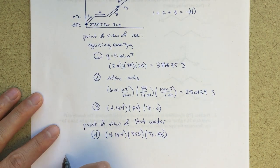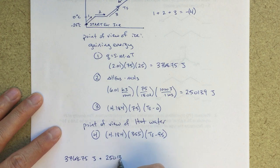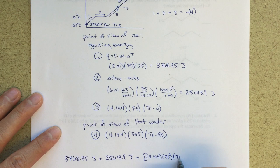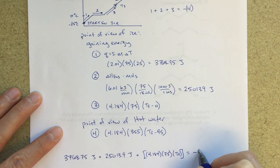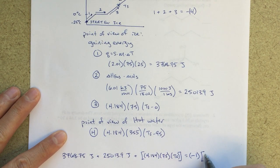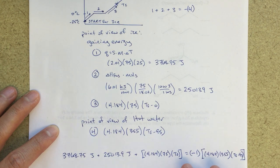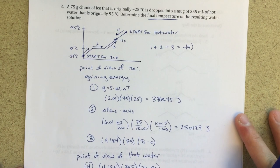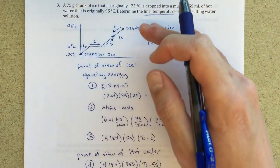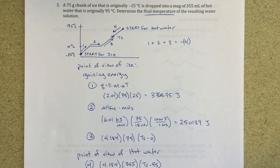Writing it all out: 3768.75 J + 25,013.9 J + (4.184 × 75 × T_final) = −(4.184 × 355 × (T_final − 95)). I've now got one big equation with one unknown, T_final. Before solving, I want to emphasize the process: figuring out your picture, figuring out what steps are necessary for each point of view, and figuring out how they relate to one another — that's the real key to this problem.